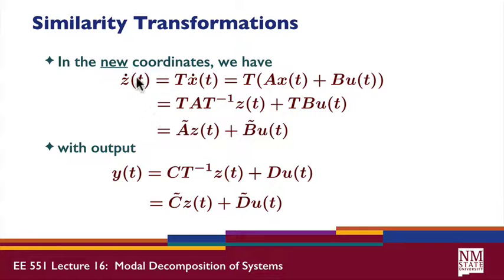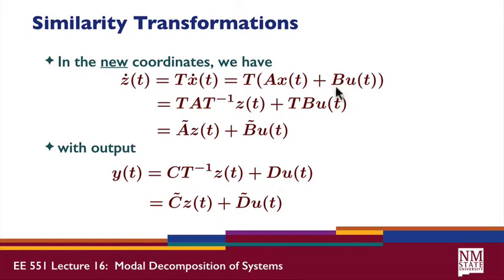In the new coordinates Z, if we differentiate the transformation equation, Z dot is equal to T times X dot, where T is a constant matrix. But X dot is equal to AX plus BU, so this can be written as TA times X plus TB. Now X can be written as T inverse Z, giving us our new A matrix — written as A tilde, equal to TAT inverse — and our new B matrix, B tilde, equal to TB.